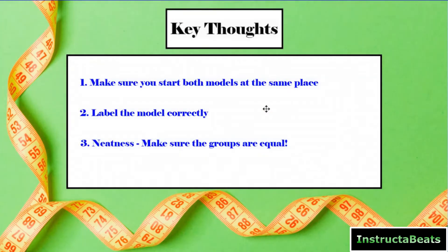Your key thoughts are the exact same as last lesson. Number one, make sure you start both models at the same place. Number two, label the models correctly. And number three, neatness. Make sure the groups are equal because multiplication and division all come from equal groups.